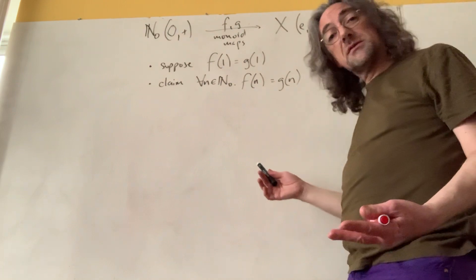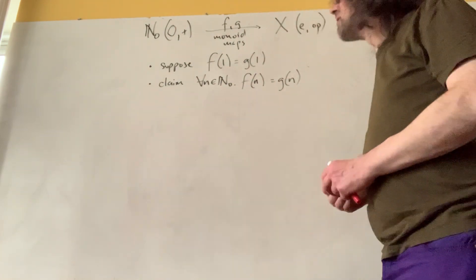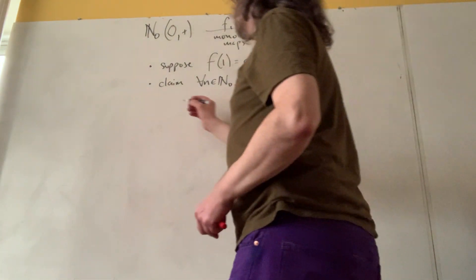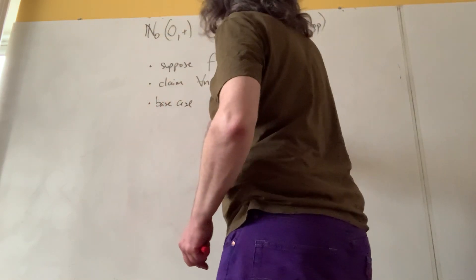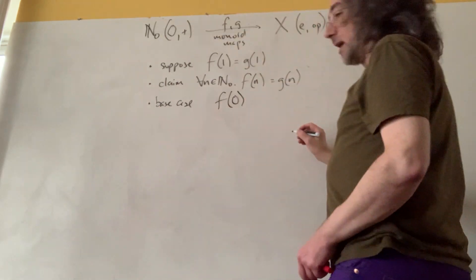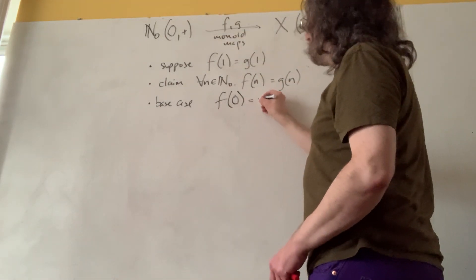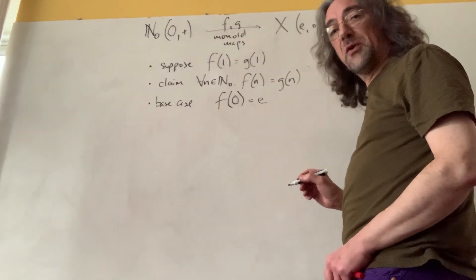How am I going to show that? Well, by induction on n, of course. Base case: I know that f of 0 has to be equal to e because f is a monoid map,